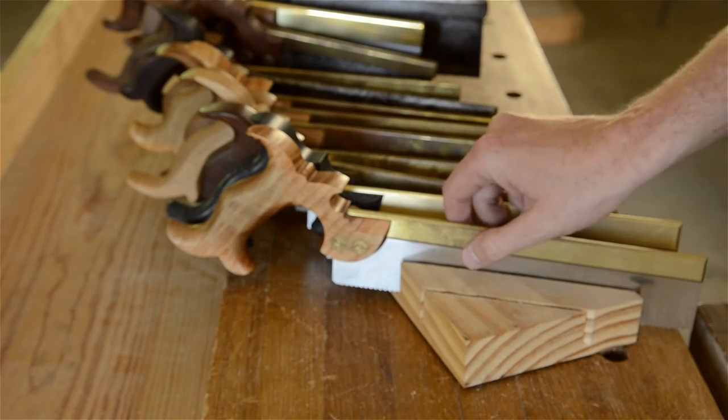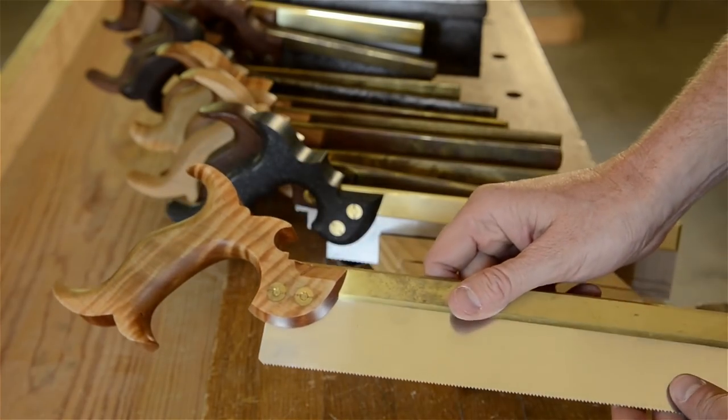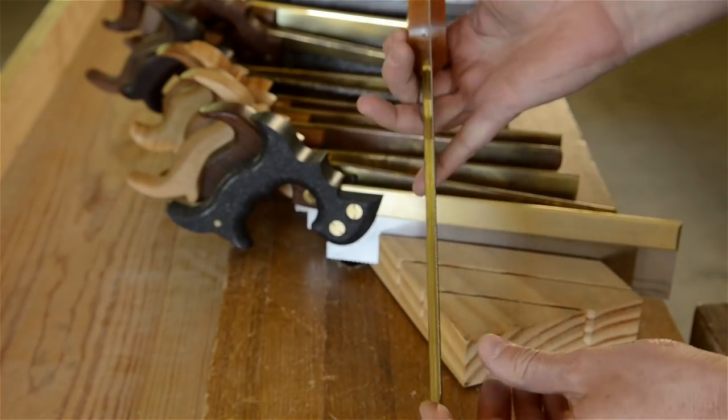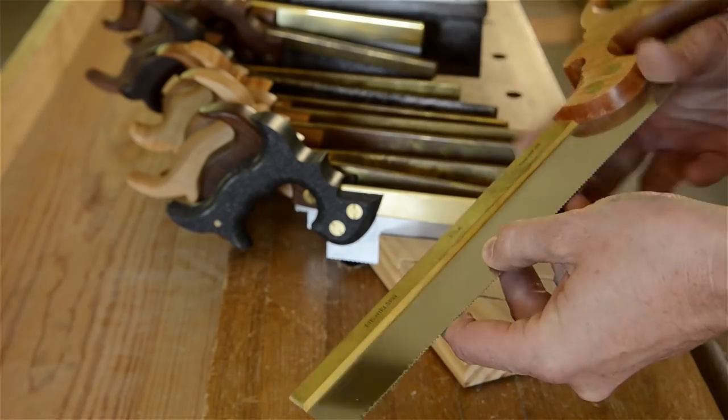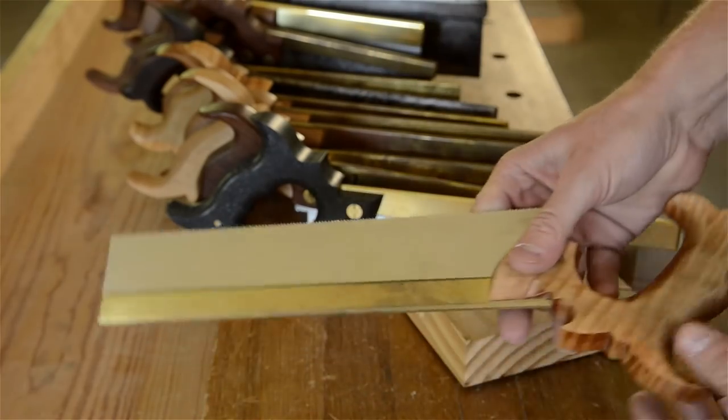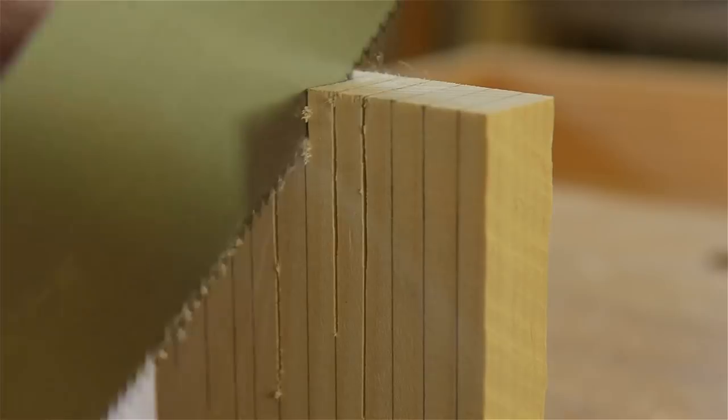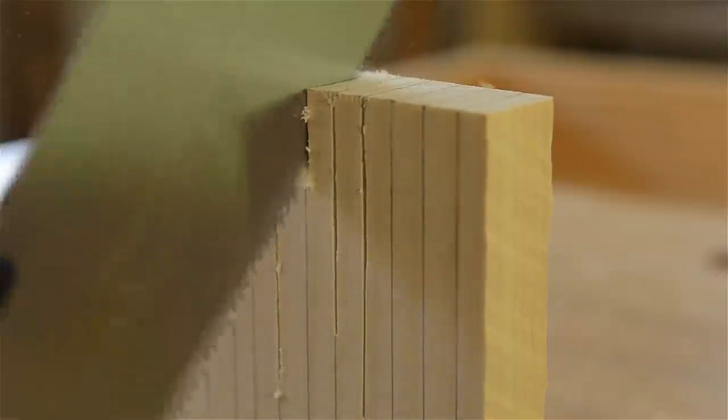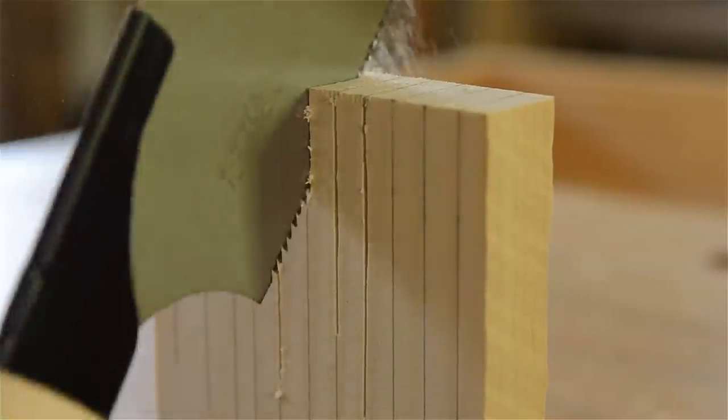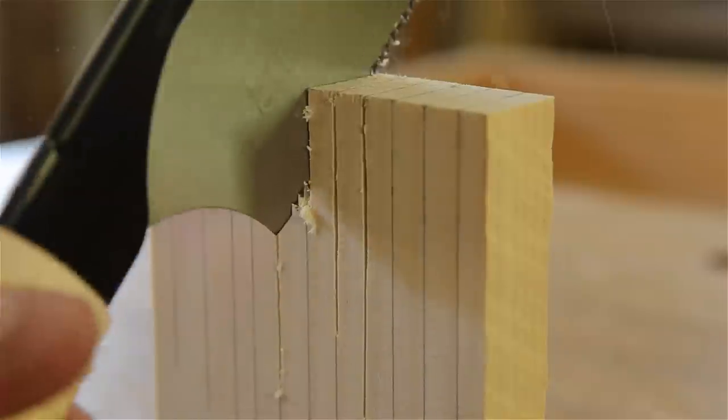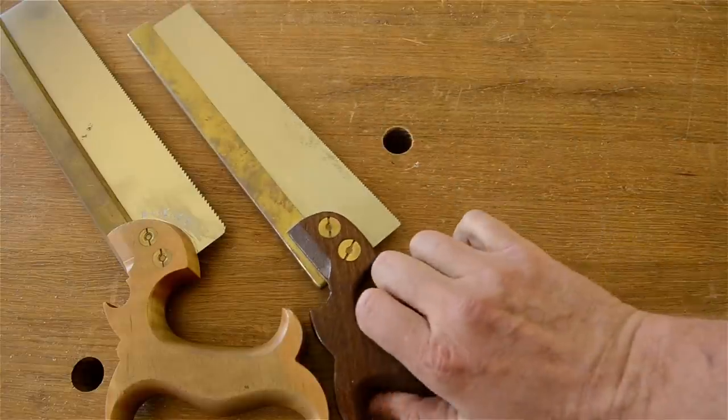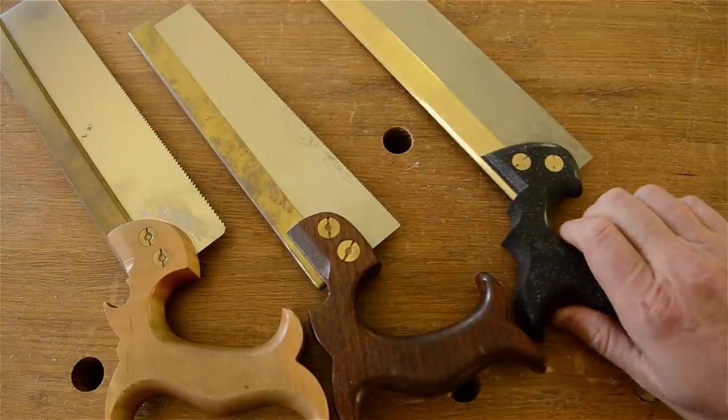Before we jump into technique, I want to point out that having a sharp dovetail saw with a thin saw plate is really important to make sure that you can learn these techniques properly. If you have a dull or poorly made dovetail saw, you won't know if the saw is the problem or if you're the problem. In the notes below this video I'll share some of the dovetail saws that I recommend to my students.